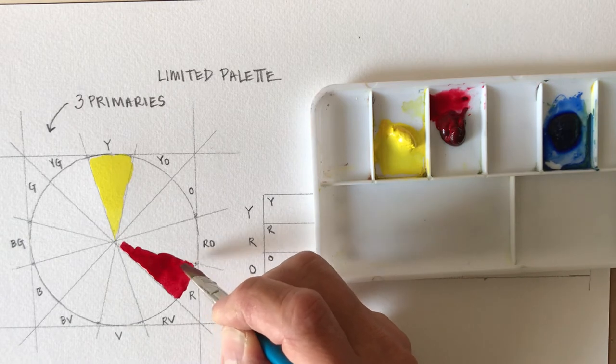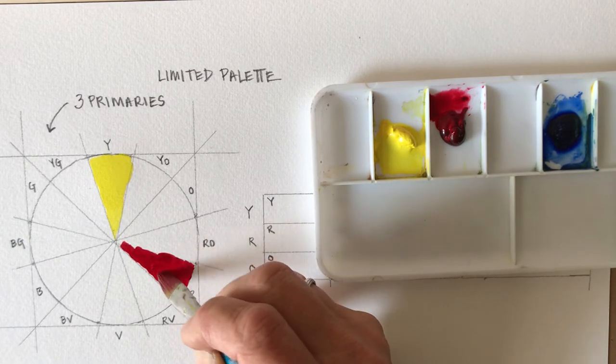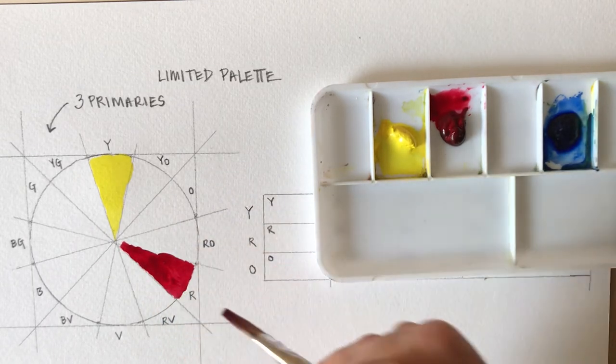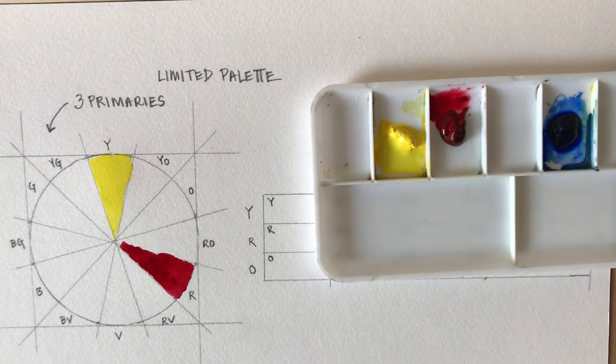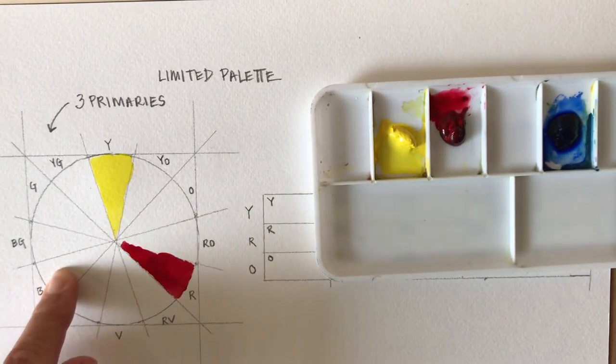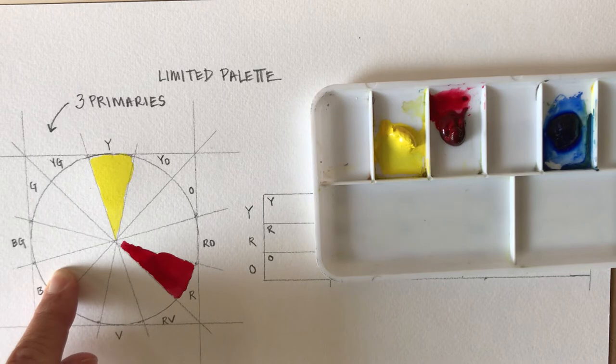Again, trying to kind of create an opaque enough layer so that not a ton of the paint comes through, not a ton of the paper shows through. Wash off the brush again, and then I could go to my blue, and then I can start to mix my secondary colors.